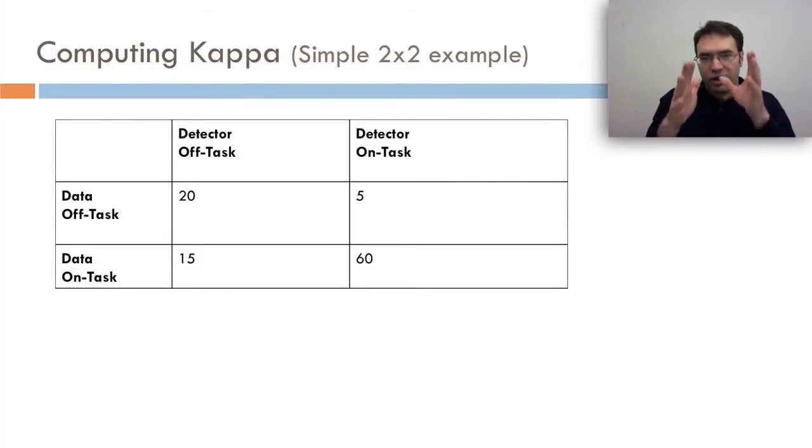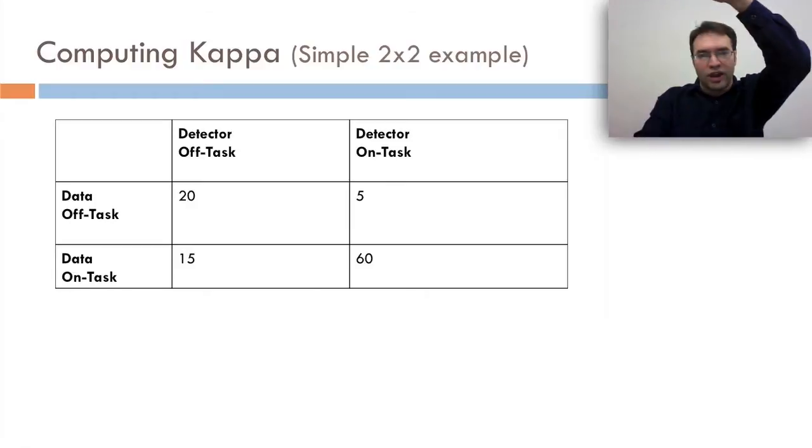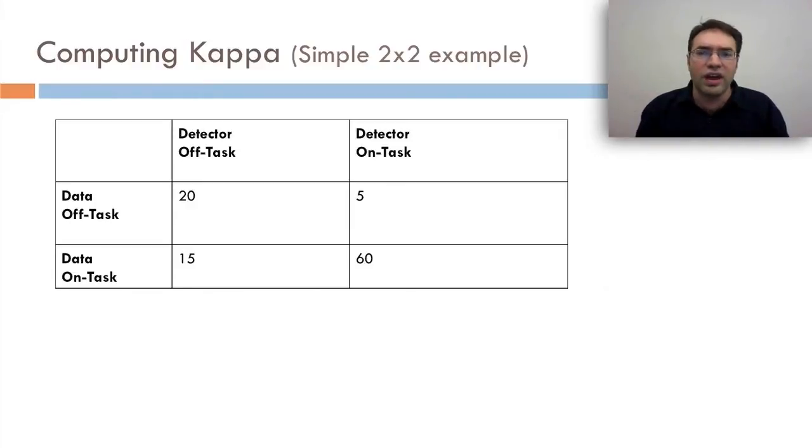Let me show a simple example. What we're going to do is take the proportion of the students in each group, in each detector and real data, and say, if students were randomly assigned to the groups but in the current proportions, what percentage of time would we see agreement? Let's take the example of a detector that's detecting if students are on task or off task, with data that says on task or off task. What we can see is that 20 times the data and detector agree the kid's off task, and 60 times they agree the student's on task, and the other 20 cases they disagree. What is the base rate agreement here?